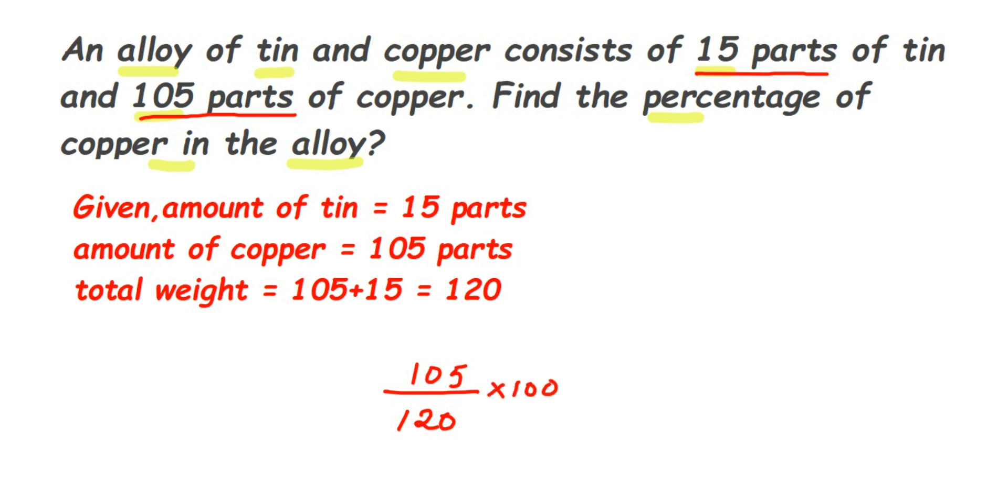So after solving this, whatever answer you got, that will be the percentage. I hope it's clear. We have found the total parts here. Total is 120 by adding up these two. And we're going to find like how you're going to find out the marks. Like you have 10 out of 20 in your exams. Similarly like that, here out of 120, we have 105.